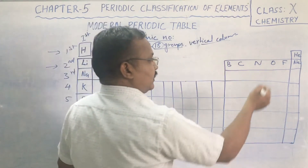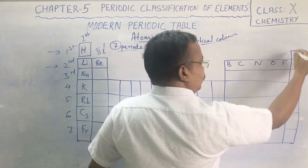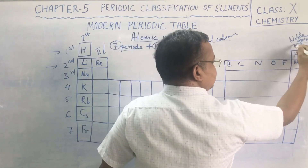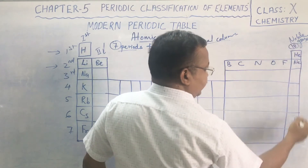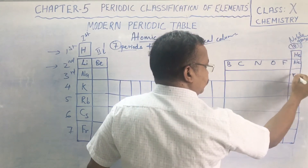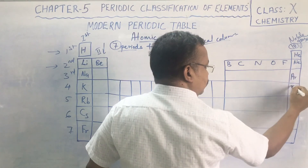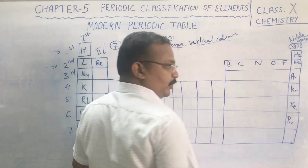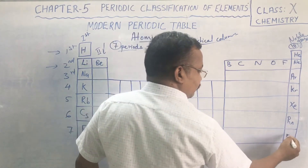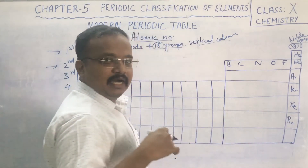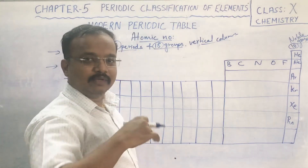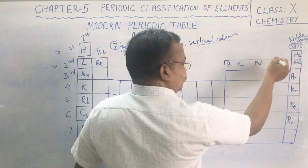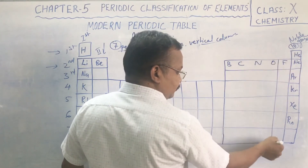At the last column we have noble gases, which comprise the 18th group. Going downward: helium, neon, argon, krypton, xenon, and radon. The last element has an IUPAC nomenclature that you will learn in higher classes.